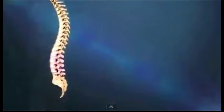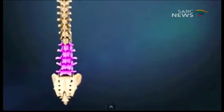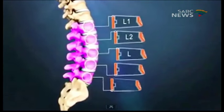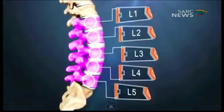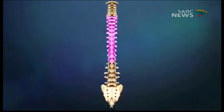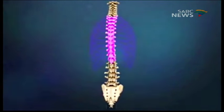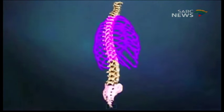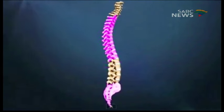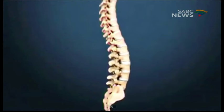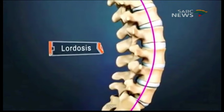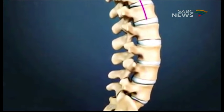The lumbar region of the spine, more commonly known as the lower back, consists of five vertebrae labeled L1 through L5. The lumbar region is situated between the thoracic or chest region of the spine, and the sacrum, and typically has a slight inward curve known as lordosis.